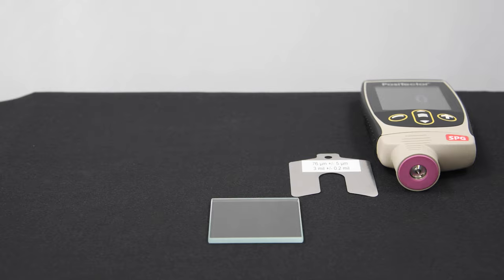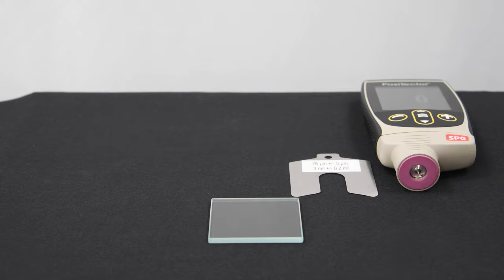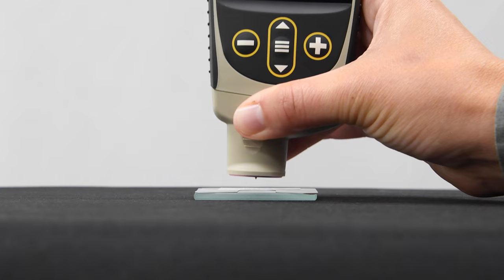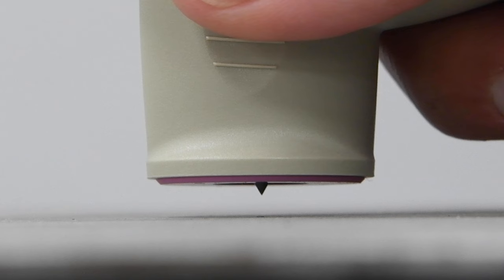Measuring surface profile with the PosiTector SPG is easy. First, verify that the instrument is operating correctly by placing the included shim on top of the glass zero plate. Place the tip of the probe on the glass while the base rests on both sides of the shim. Ensure the reading on the instrument is within combined tolerance of the shim and the gauge.